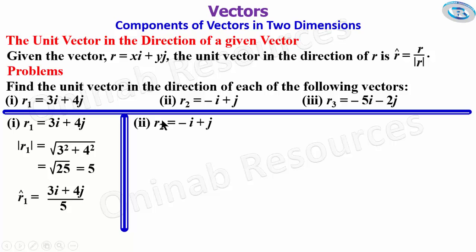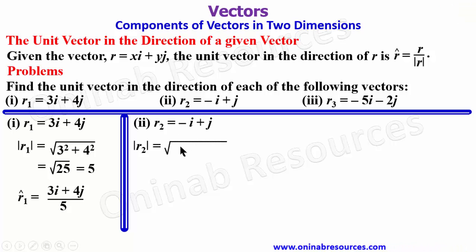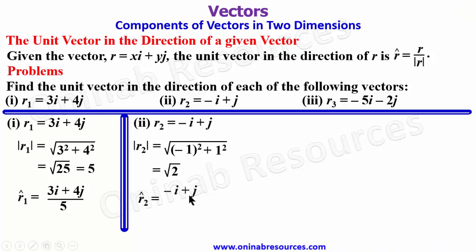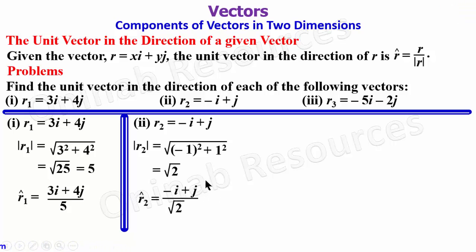For r2, the magnitude is √((-1)² + 1²) = √2. The unit vector in the direction of r2 is r̂2 = (-i + j) / √2. That's the unit vector in the direction of r2. We can also see it as the unit vector parallel to r2.